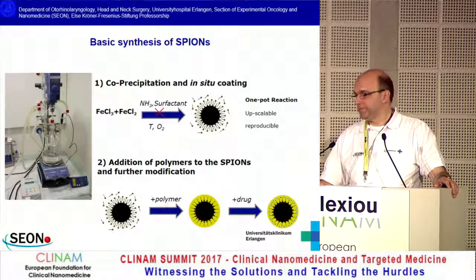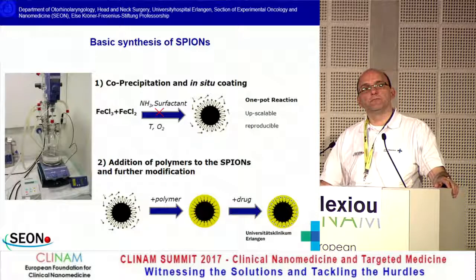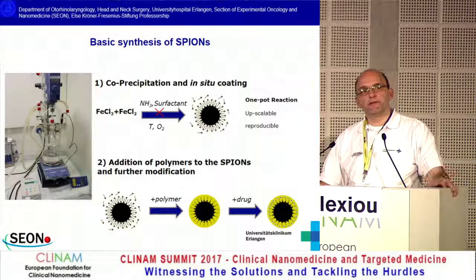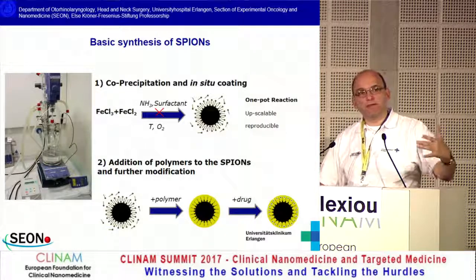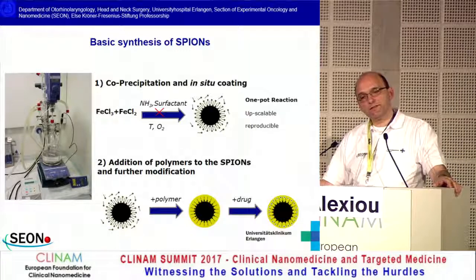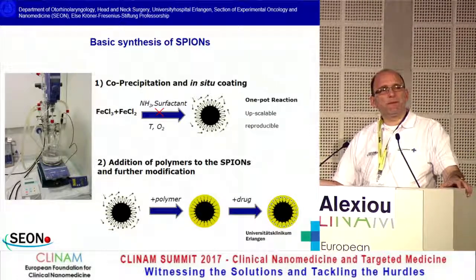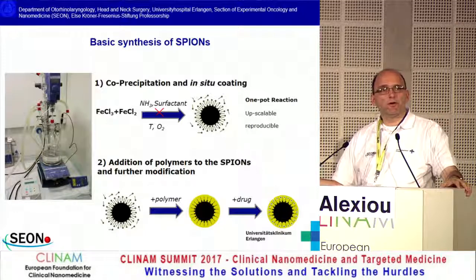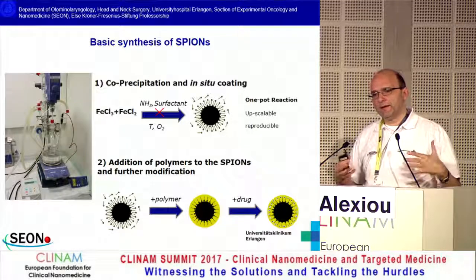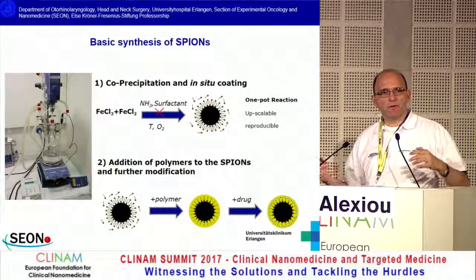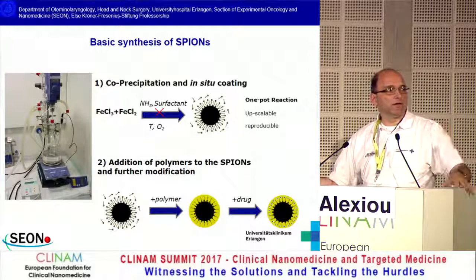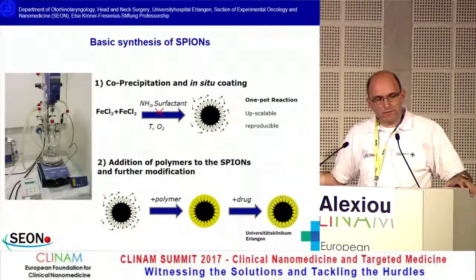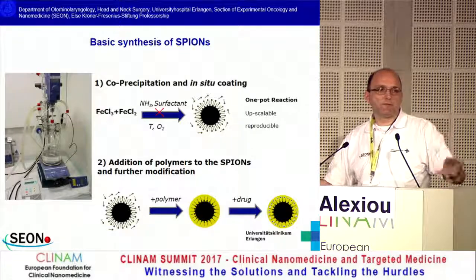For MPI imaging, do the particles have to be aggregated or clustered inside? Are they single-core crystals or multiple-crystal aggregates? They are multiple crystals — not a single particle. It's very interesting because nobody knows exactly what the most beneficial particles for MPI are. Everybody is referring to Resovist, which is no longer produced, and the MPI system was designed according to Resovist. We have multi-core particles.